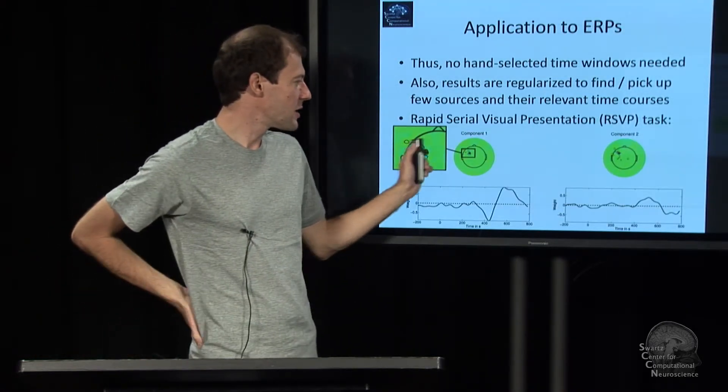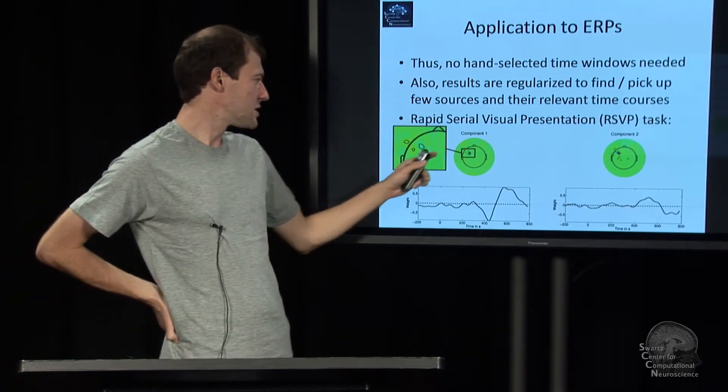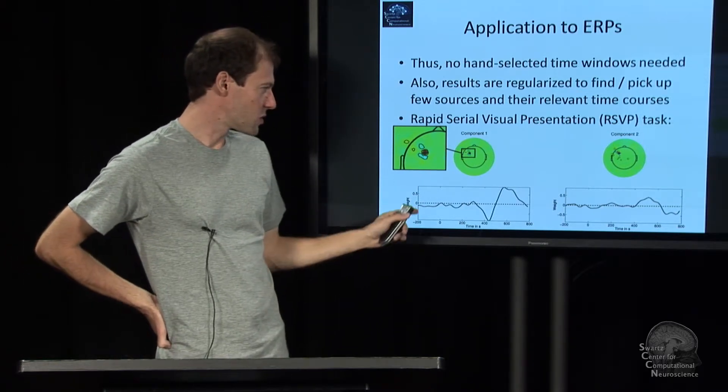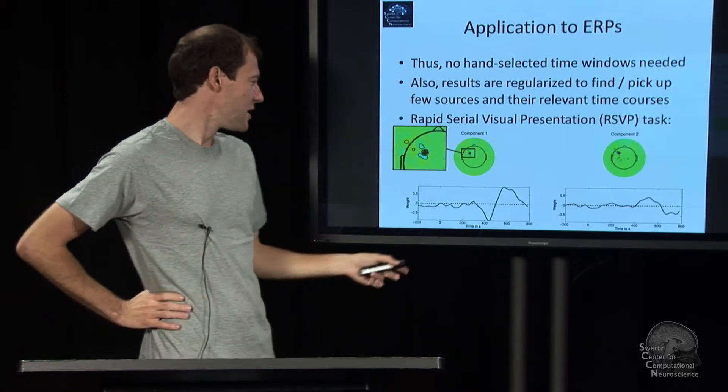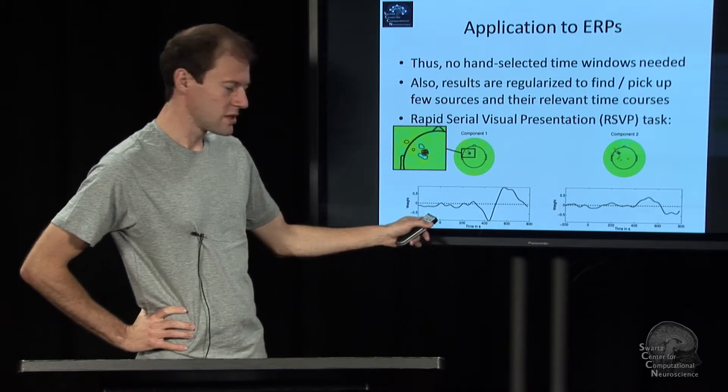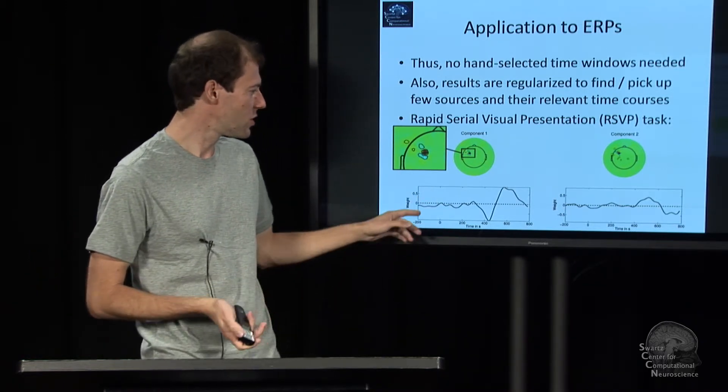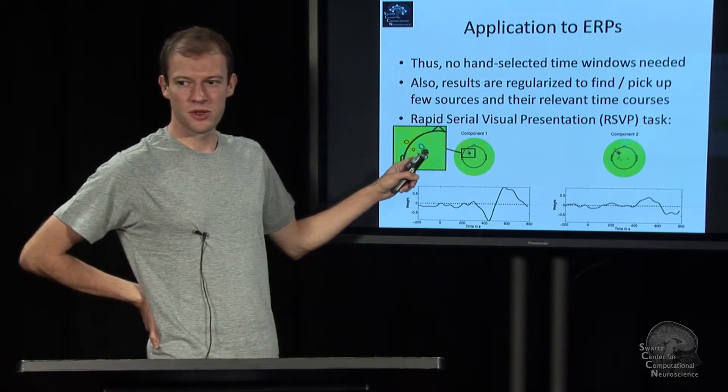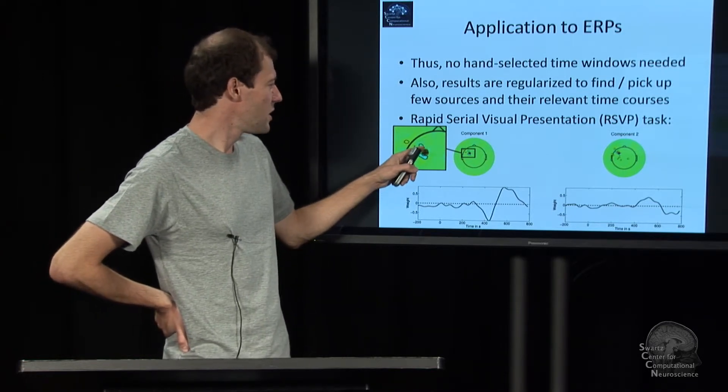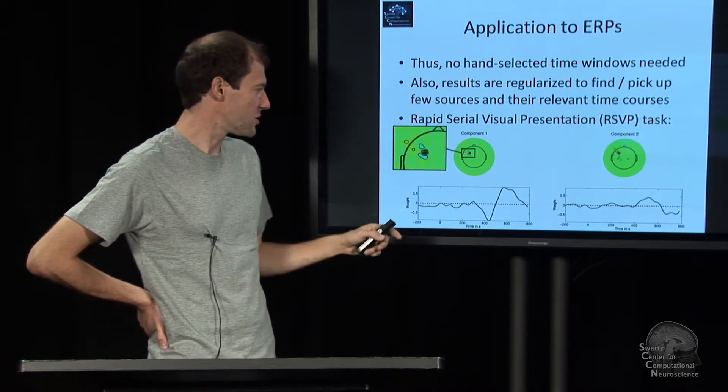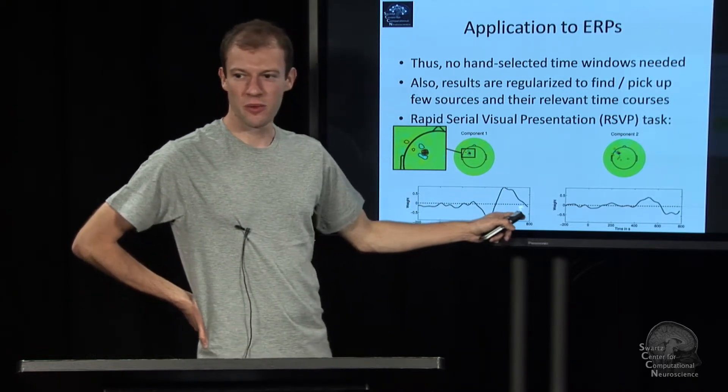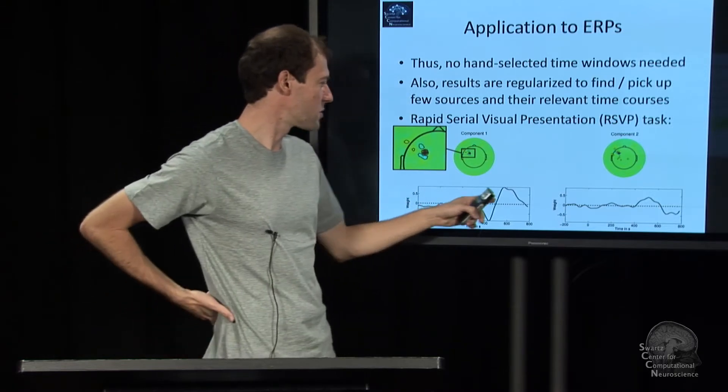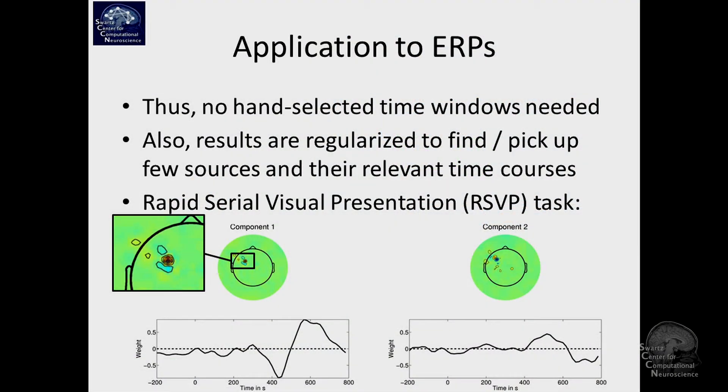So here's what you get when you apply this to some actual data. This is this methodology applied to a rapid serial visual presentation task. The person was supposed to find an airplane or something on a satellite image. There is a time point zero when I think the image is presented. But in any case, what it learns is a very finely tuned spatial filter. This is a very high number of channels, 256 or so. This is some kind of a surface Laplacian or so. And an associated time course, which looks very biologically meaningful. That's just a typical ERP time course, basically.